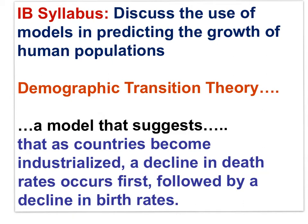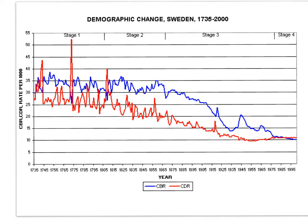Here is a graph of birth and death rates for Sweden over time. In the 1700s and 1800s, birth rates and death rates were both high, mostly because of an absence of clean water, strong sewage sanitation systems, and rural health care. In the 1900s, death rates dropped followed by birth rates. Natural increase rate was high through this period as the population grew. But today, Sweden's birth rates and death rates are both low and nearly the same, so the population as a whole is no longer growing.